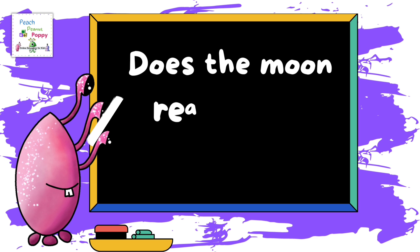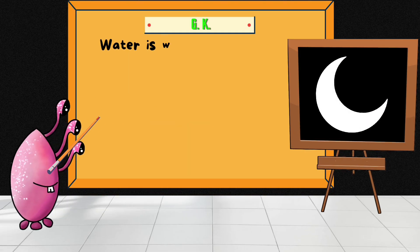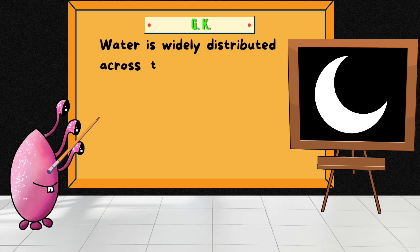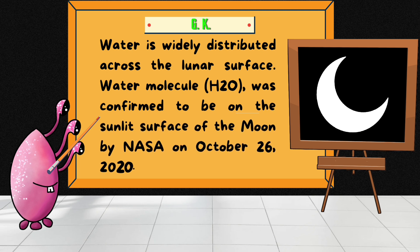Does the moon really have water? Water is widely distributed across the moon's surface. Water molecule, which is H2O, was confirmed to be on the summit surface of the moon by NASA on October 26, 2020.